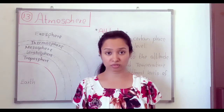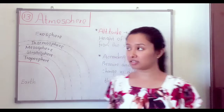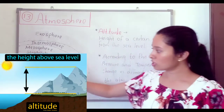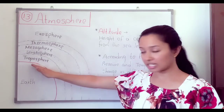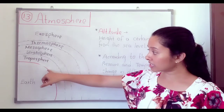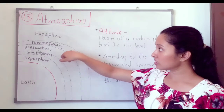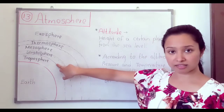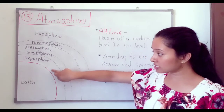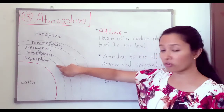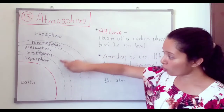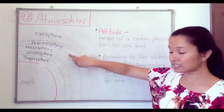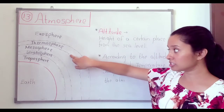What is the meaning of altitude? Altitude means the height of a certain place from the sea level. So this is the sea level. From the sea level, what is the height of the places? Think about this place — what is the height from the sea level? That is the altitude of this place.